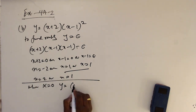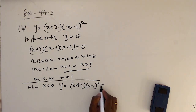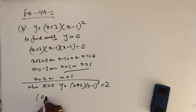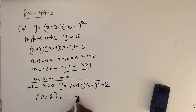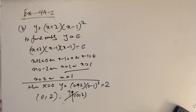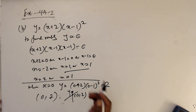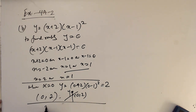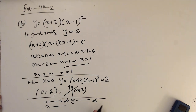When x equals 0, y equals (0+2) times (0-1) squared which is 2. So the curve cuts the y-axis at (0, 2). The coefficient of x cubed is positive, so we expect x going to positive infinity means y goes to positive infinity, and x going to negative infinity means y goes to negative infinity.